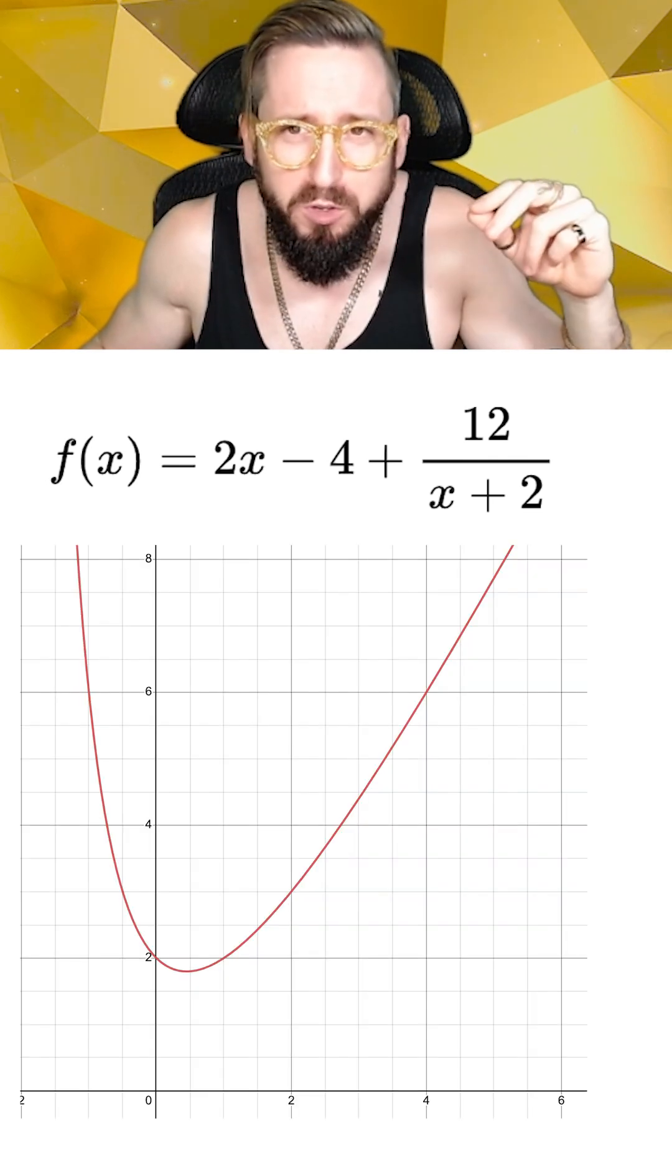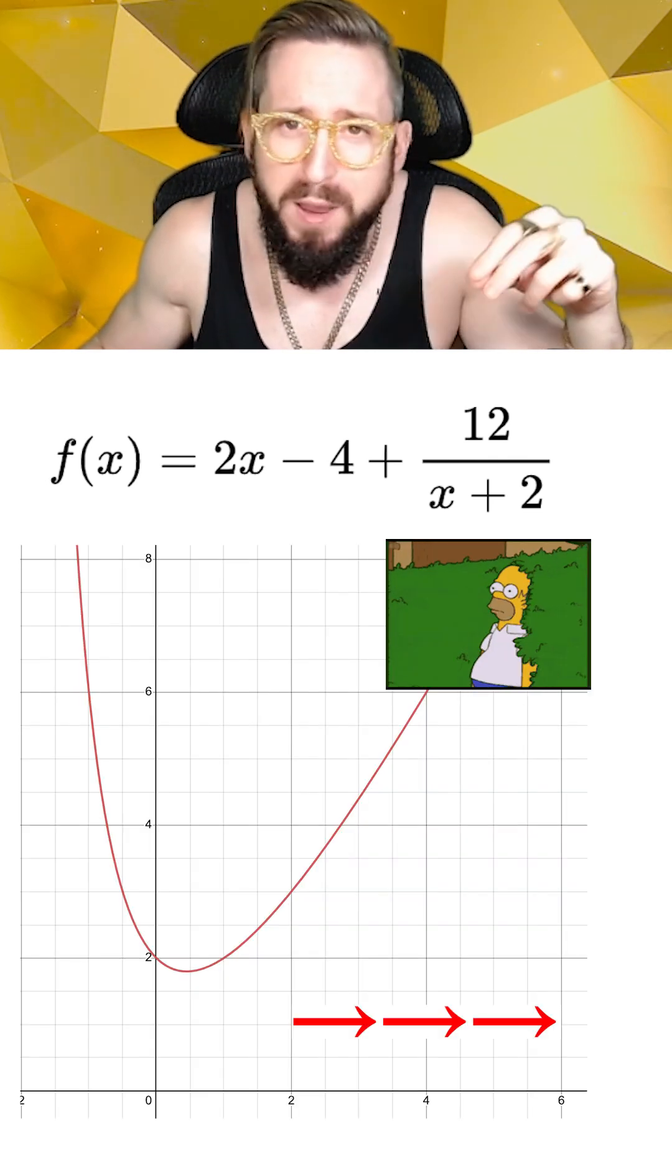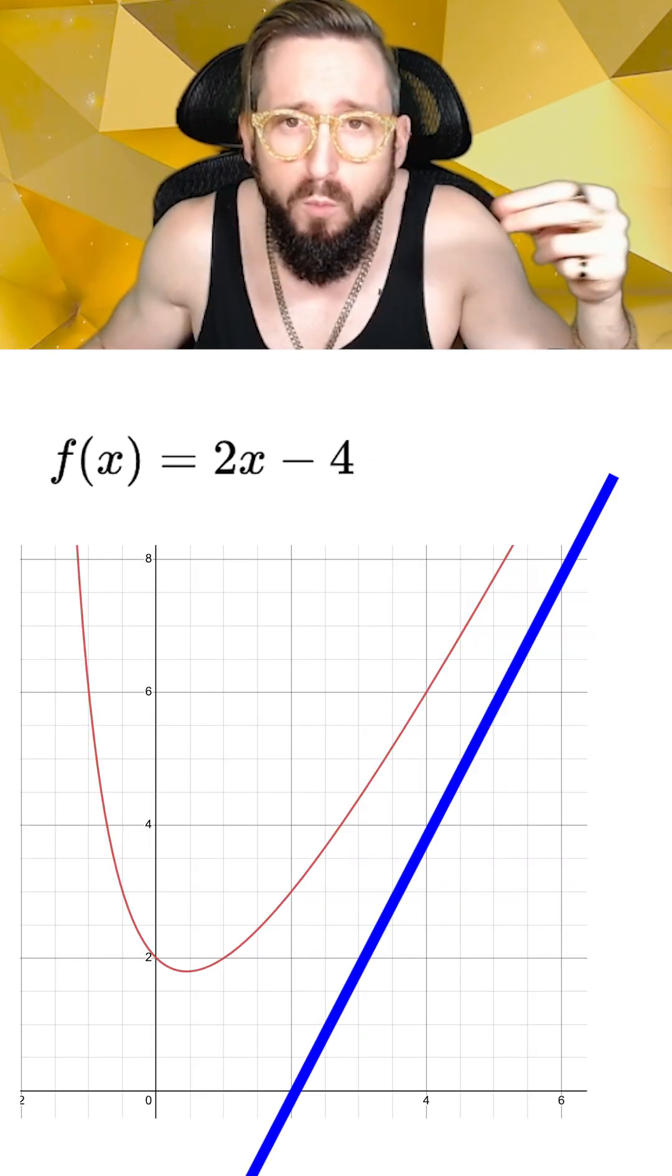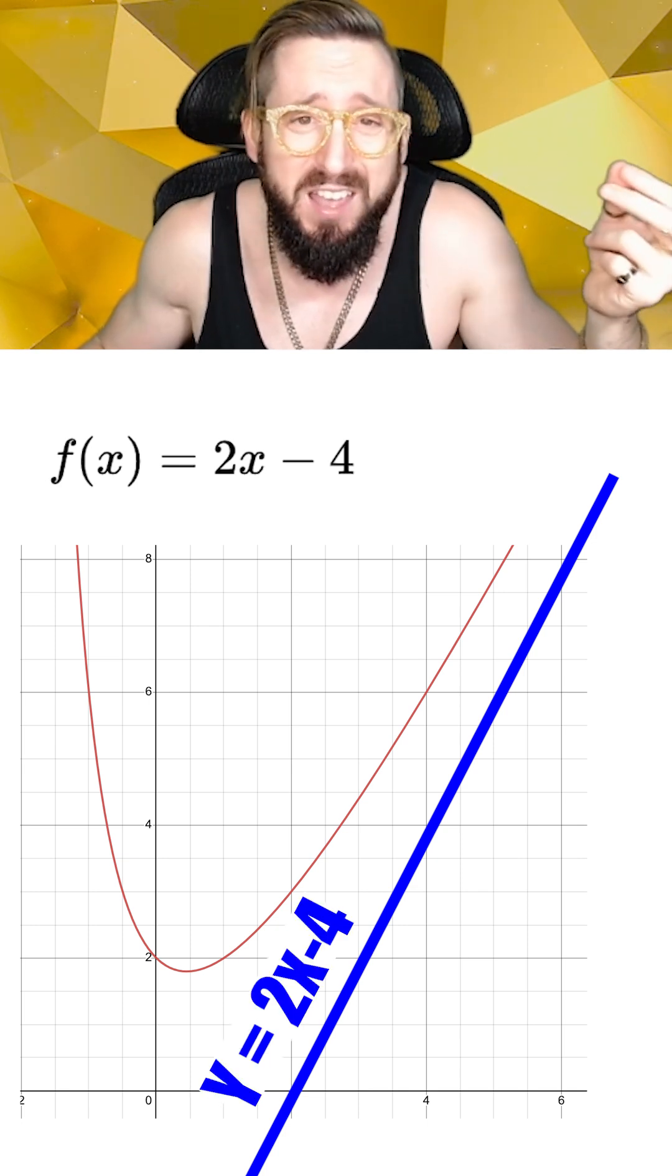This creates what we call a slant asymptote, because as x gets really big, the remainder starts to disappear, and the function looks more and more just like the equation of a line, which in this case is 2x minus 4.